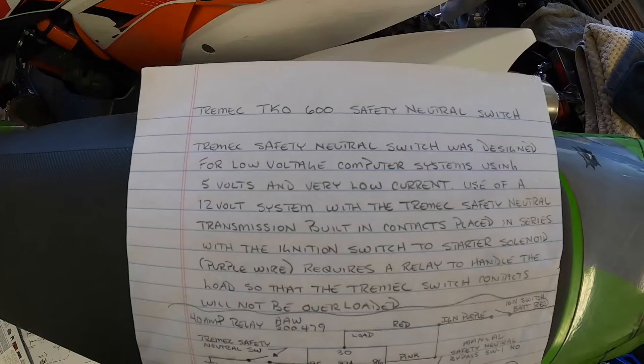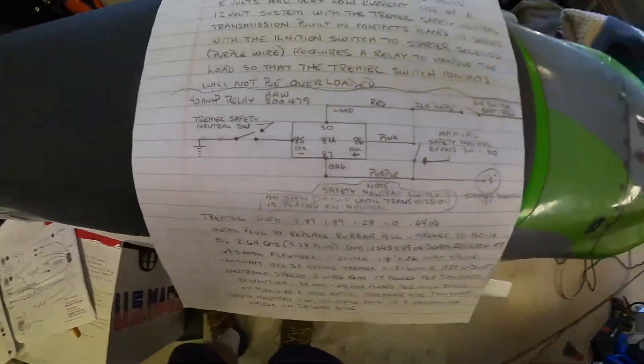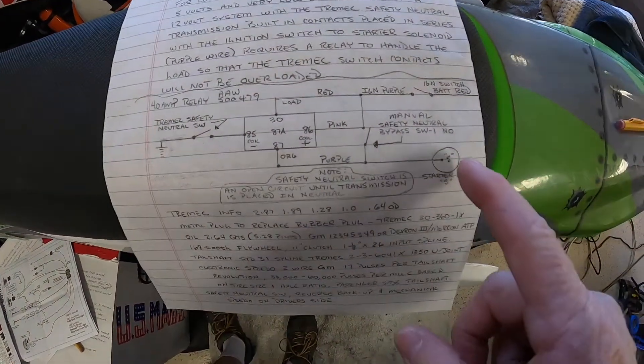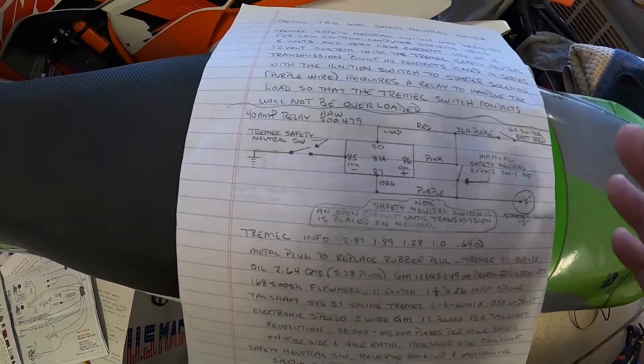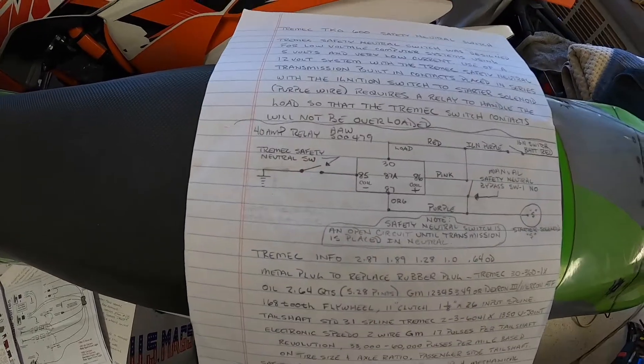On my Tremec TKO 600 safety neutral switch, I'll be installing a relay between the transmission switch and the starter solenoid. And my understanding is for my particular model transmission when I bought it, these contacts here were primarily designed for computer contacts. Five volts, very low current.